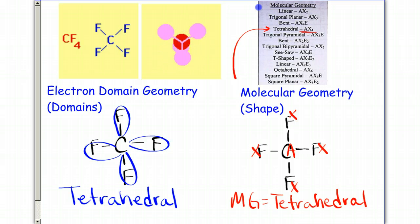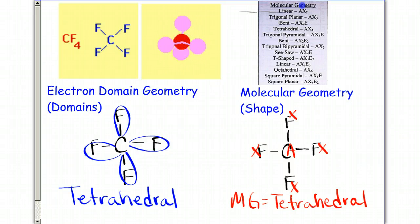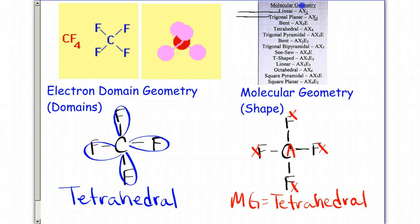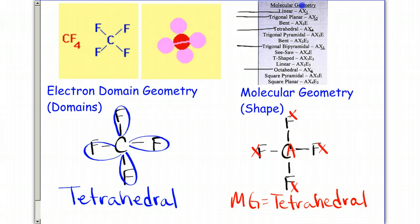That'll actually happen anytime there are no lone pairs on the center atom. Looking at your list of domain geometries: two domains is linear, three domains is trigonal planar, four domains is tetrahedral, five domains is trigonal bipyramidal, and six domains is octahedral. Each of the molecular geometries that does not have a lone pair or an E is going to match up with the electron domain geometries from your first list.